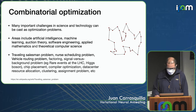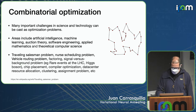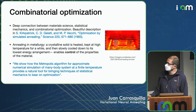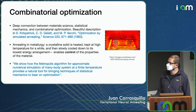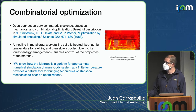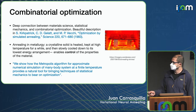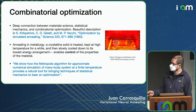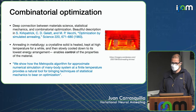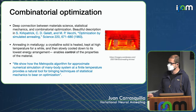There is a deep connection between material science, statistical mechanics, and combinatorial optimization, as beautifully described in the paper by Kirkpatrick, Gelatt, and Vecchi. Optimization by simulated annealing is a technique based on Markov chain Monte Carlo to solve combinatorial optimization problems.